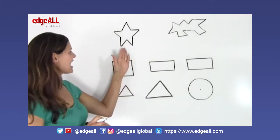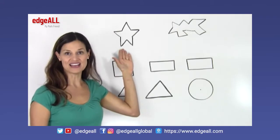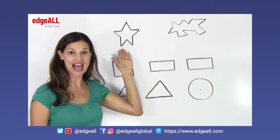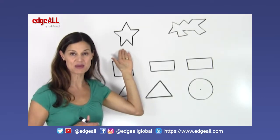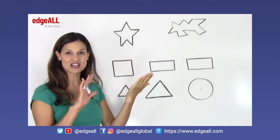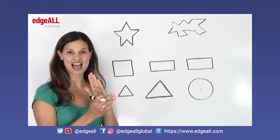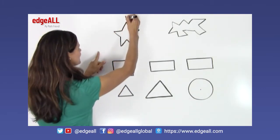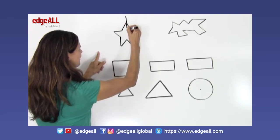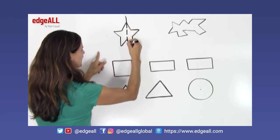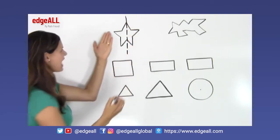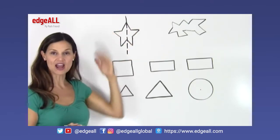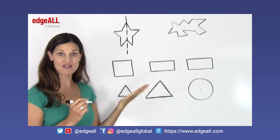Here is an example of a symmetrical shape. It has at least one line that I can draw through the shape that will have a reflection on each side. If I draw a line right down through the middle of this shape, you can see that the shapes on either side of the line are mirror images of each other.